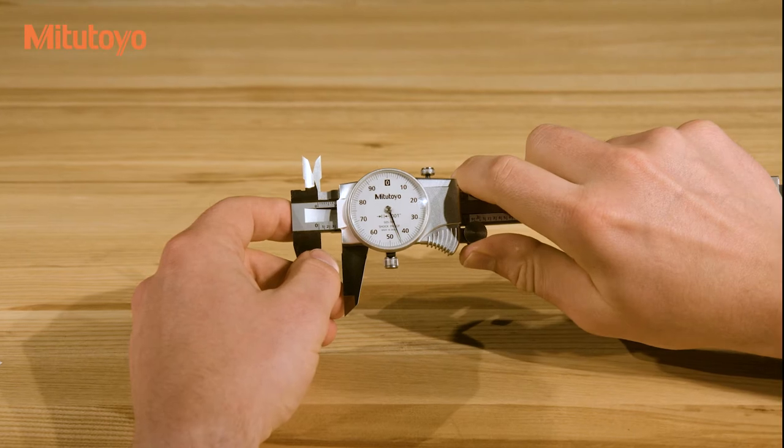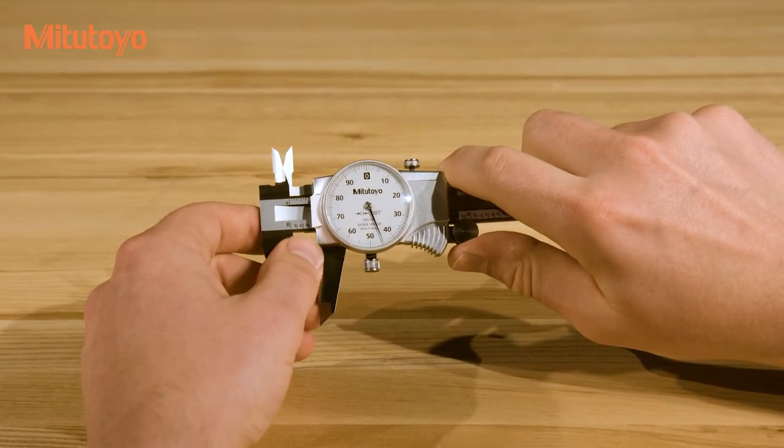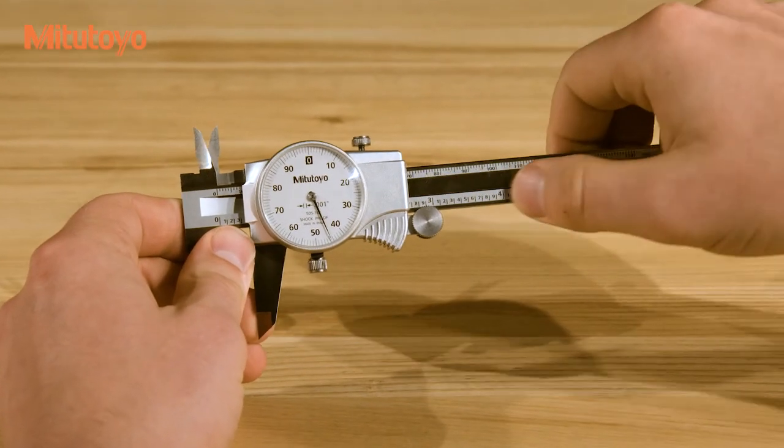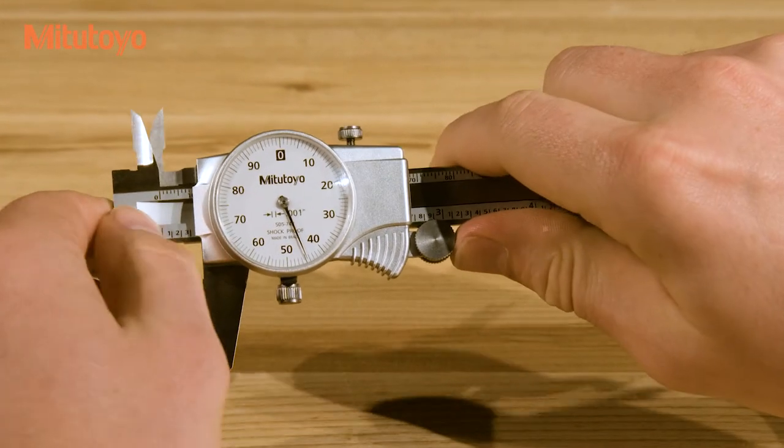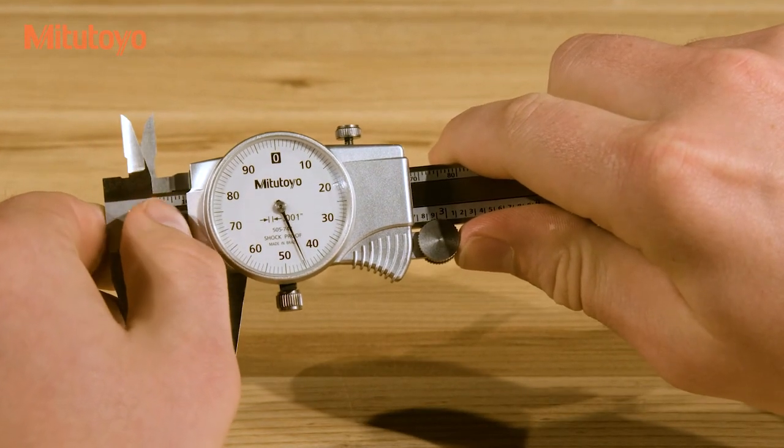There are two sets of graduations on a dial caliper. On an inch caliper like this one, the main scale is marked in .1 inch intervals and is read directly by finding the last line passed by the end of the sliding jaw.